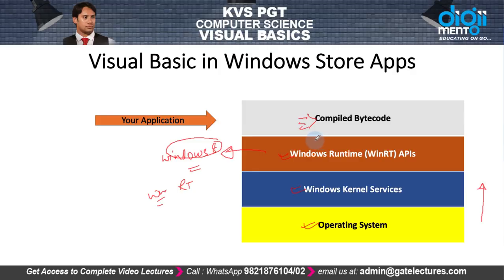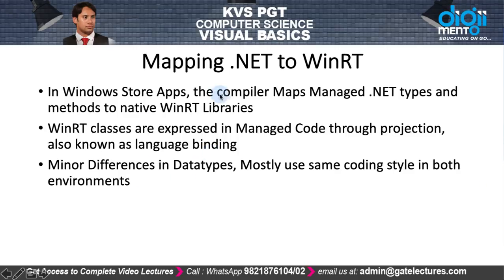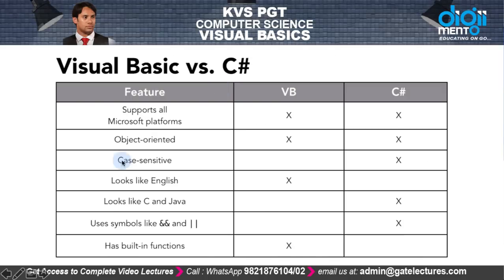The compiler uses mapping files that map .NET types and methods to native Windows RT types and methods. The classes and libraries of Windows Runtime are expressed in managed code through a process called projection, also called language binding. You can search about language binding in the context of Windows Runtime in Visual Basic.